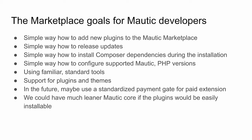The marketplace should have a way to configure what each plugin supports — Motic 2, Motic 3, or specific PHP versions. Plugin developers should specify that to avoid compatibility issues. It would also be a plus if the marketplace used familiar standard tools that PHP developers already use. It should support plugins as well as themes the same way. In the future, it could support a standardized payment gateway for paid extensions — but first we focus on open-source, publicly downloadable plugins.